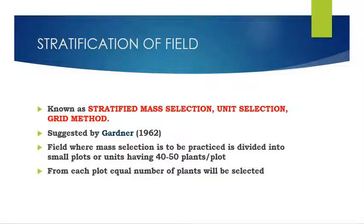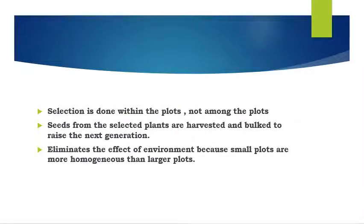Stratification of field, also known as stratified mass selection, unit selection, or grid method, was suggested by Gardner in 1962. Here the field where mass selection is practiced is divided into smaller homogenous plots having 40 to 50 plants per plot. From each plot, an equal number of plants are selected within the plot and not among the plots, and their seeds are harvested in bulk and used to raise the next generation.